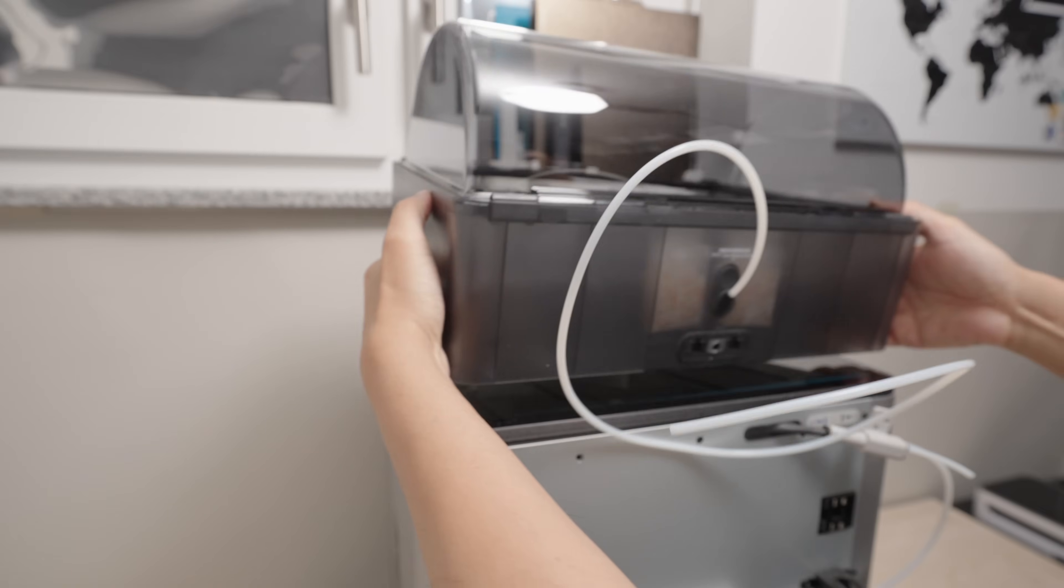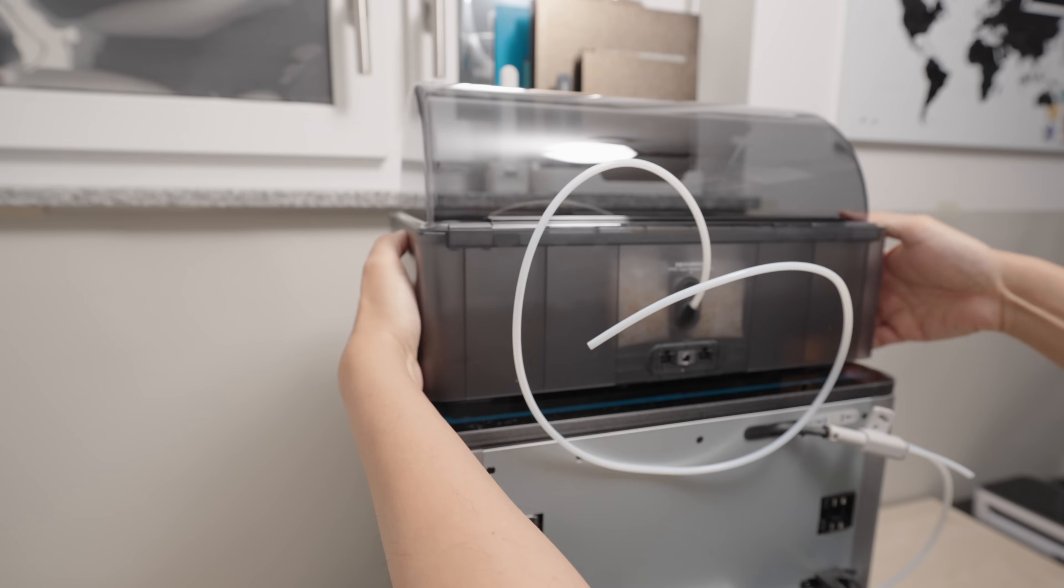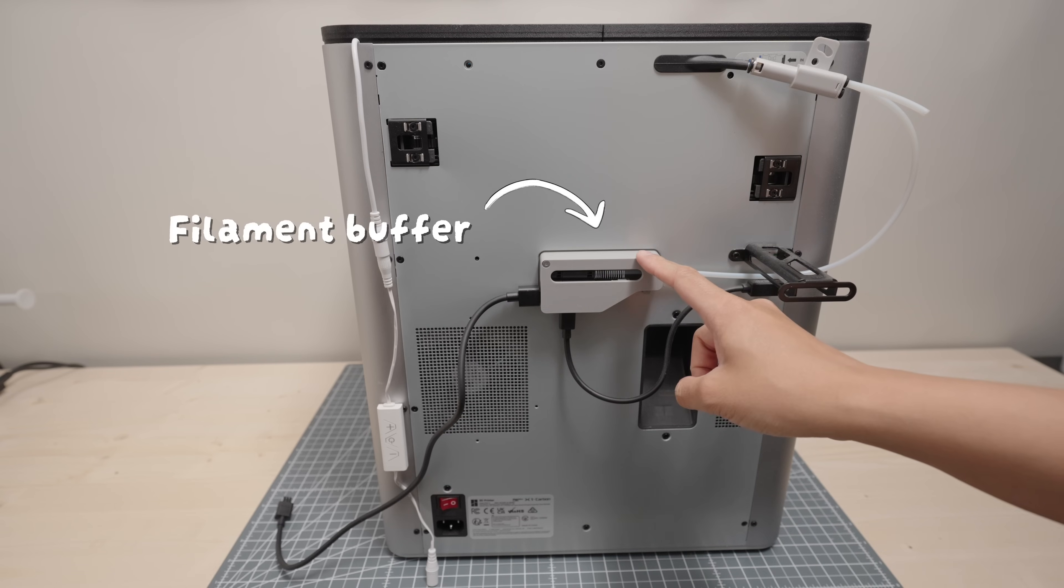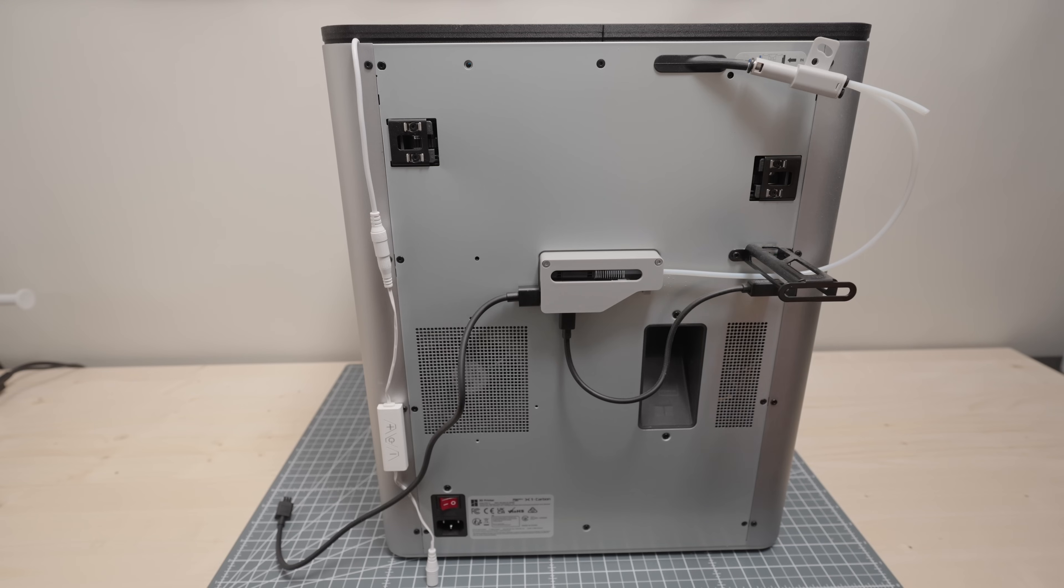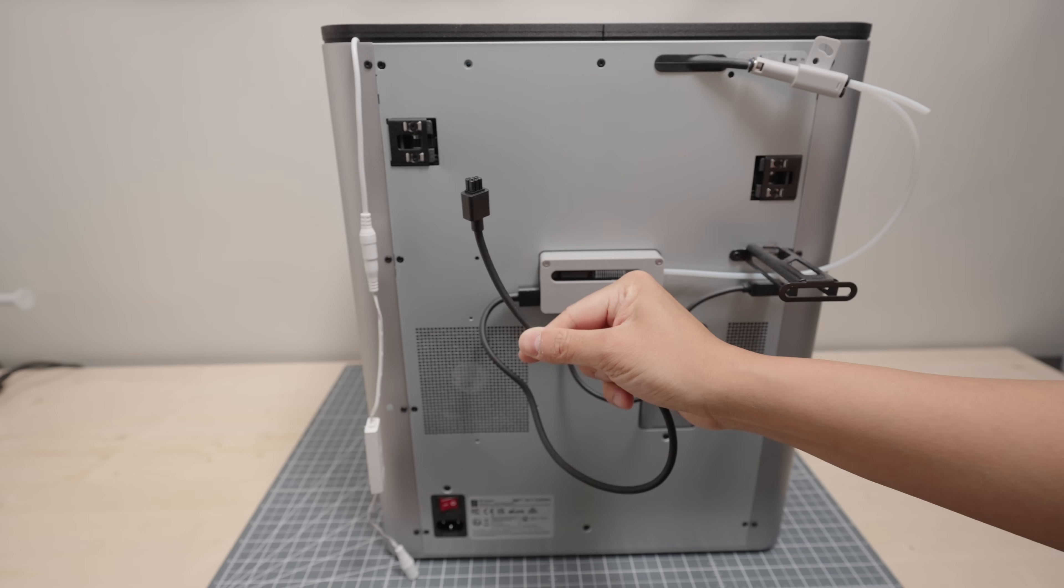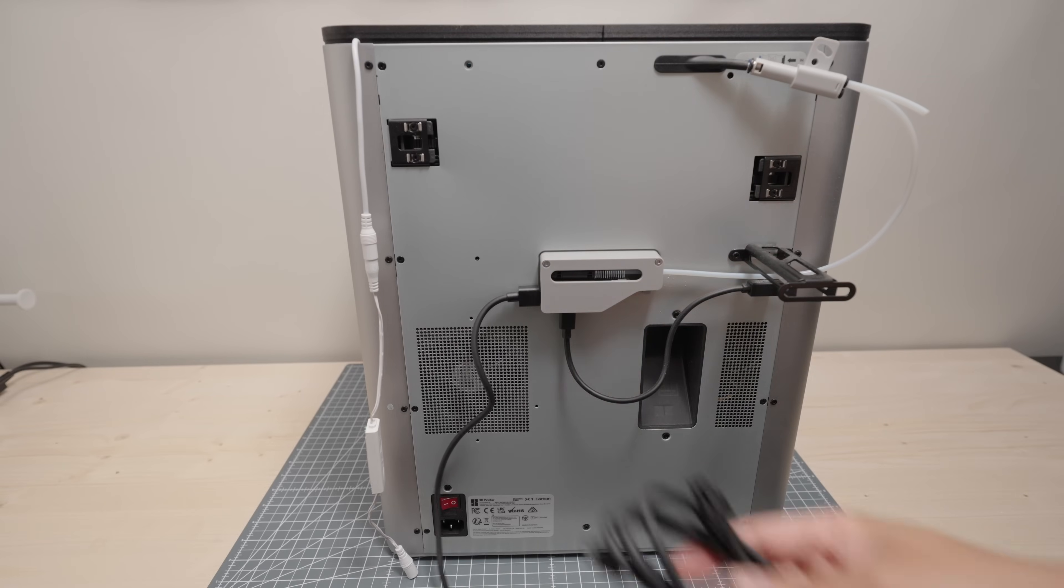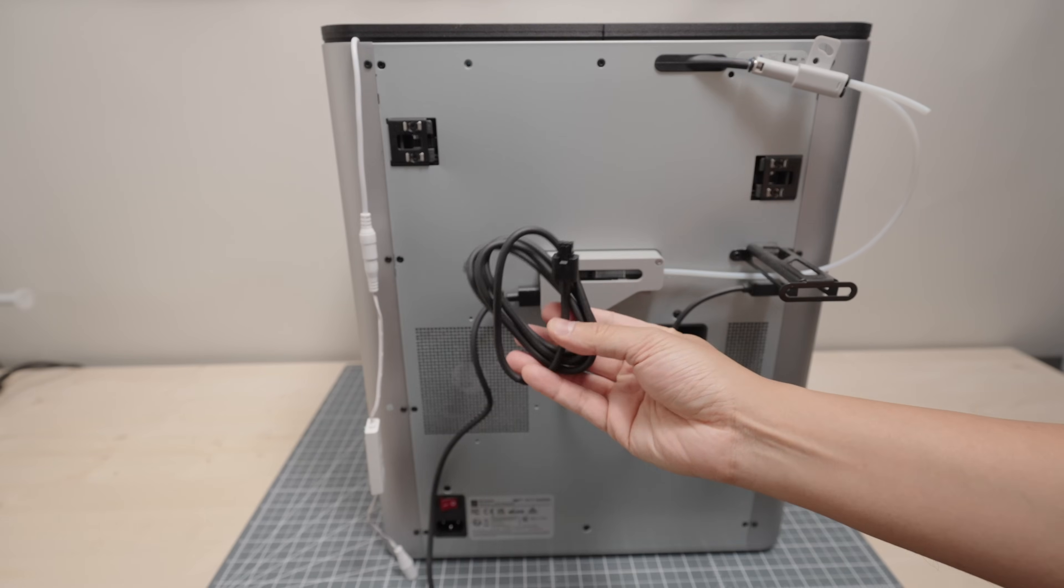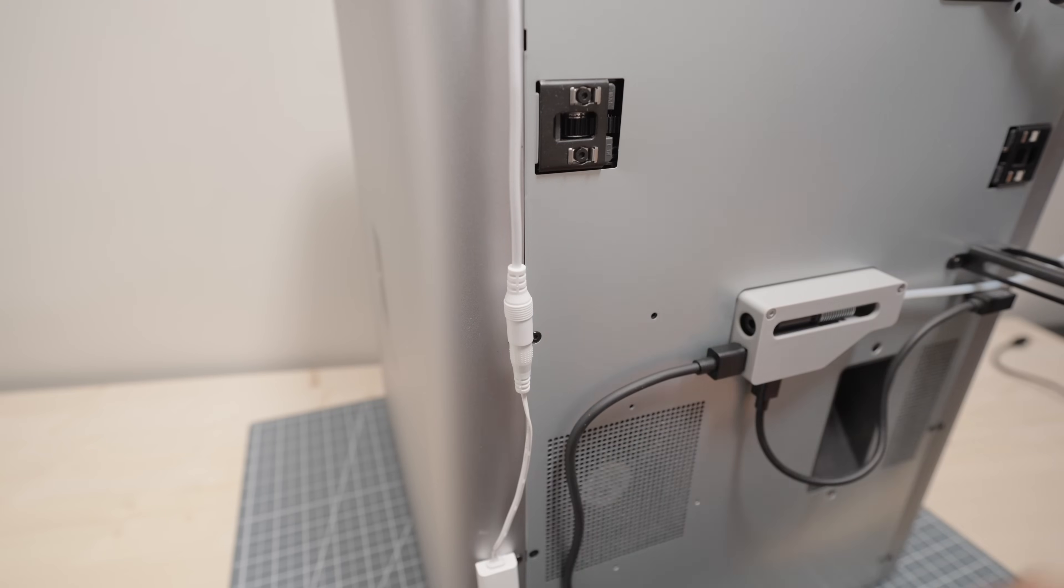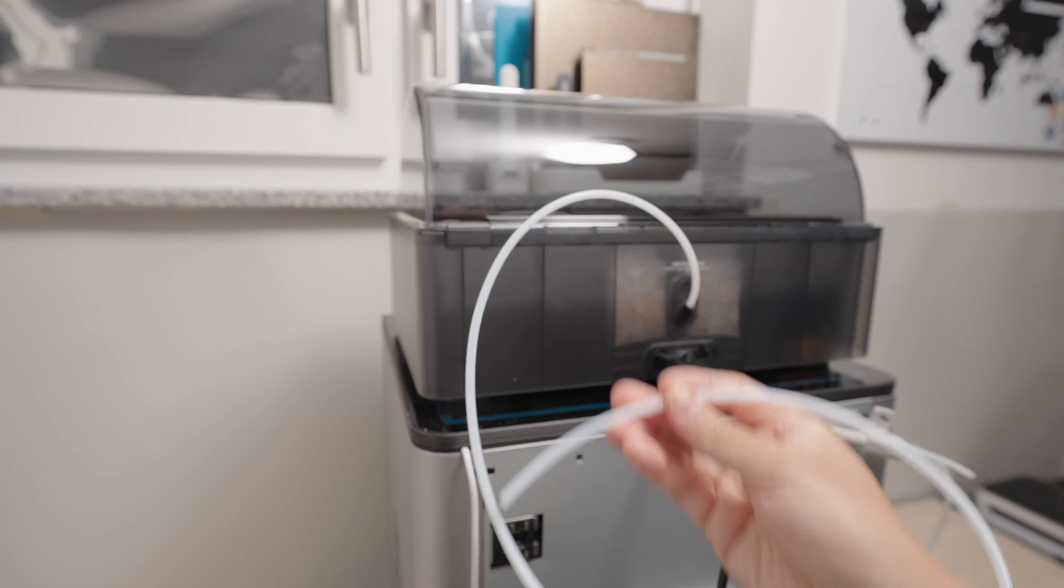Now let's connect the AMS2 Pro to my X1C printer. If you have a non-combo X1 or P1 series printer, you might need to buy the filament buffer separately. Mine came already pre-installed since it is an X1C combo. So all I have to do is remove this 6-pin cable and replace that with the 6-pin cable that came with the AMS2 Pro. You want to make sure to use the provided 6-pin cable to connect the AMS2 Pro to your printer. Then install the tube.